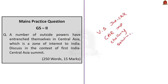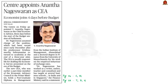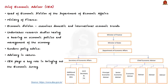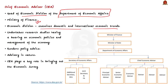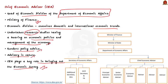The next article states that the Centre appointed Mr. V. Anantha Nageswaran as the Chief Economic Advisor. The Chief Economic Advisor is the head of the Economic Division of the Department of Economic Affairs, which comes under the Ministry of Finance. This division examines domestic and international economic trends, undertakes research studies dealing with economic policies and management of the economy, and offers policy advice — though its recommendations are advisory in nature. The Chief Economic Advisor also plays an important role in bringing out the Economic Survey, which presents the government's economic report card and gives suggestions on possible reforms.